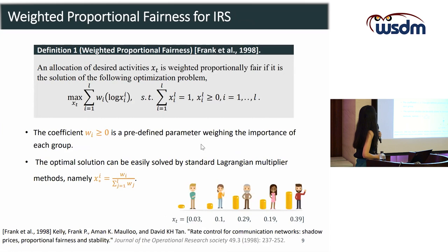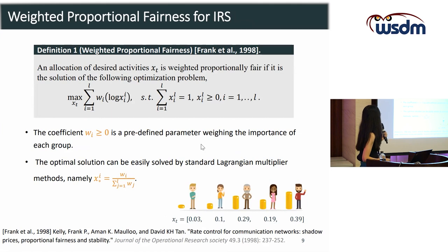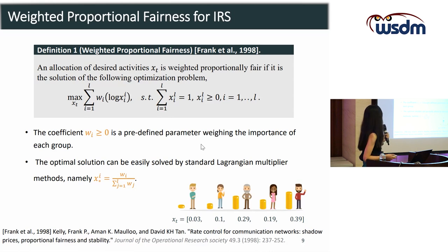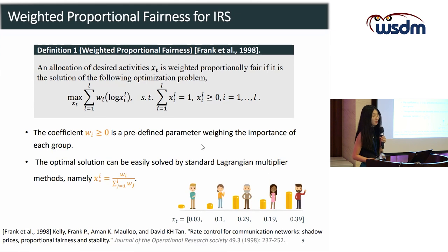In this work, we adopt a well-accepted fairness metric called weighted proportional fairness, defined in Definition 1, which is the generalized natural solution for multiple groups. Here, W_i is the predefined parameter weighing the importance of each group, and X_i is the current allocation distribution — an L-dimensional vector if we have L different item groups. This optimization problem can be solved by the standard Lagrangian multiplier method, and the optimal solution X* is proportional to the predefined parameter W_i.